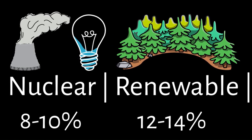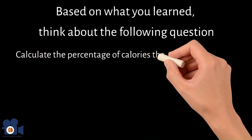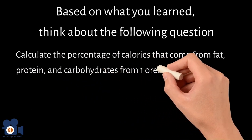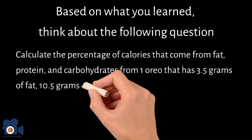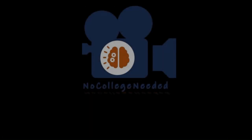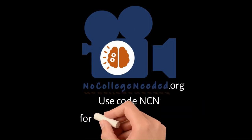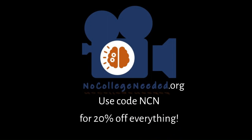I hope these explanations help. If you have any further questions, feel free to ask. Based on what you learned, calculate the percentage of calories that come from fat, protein, and carbohydrates from one Oreo that has 3.5 grams of fat, 10.5 grams of carbohydrates, and zero grams of protein. Thank you for spending your valuable time learning. If you want to learn more, donate, or get tutoring, please check out my website nocollegeneeded.org — use the code NCN for 20% off tutoring and any supplemental material.